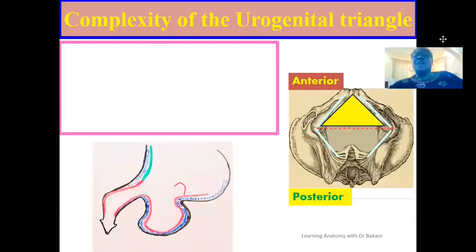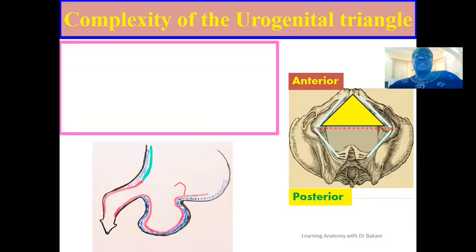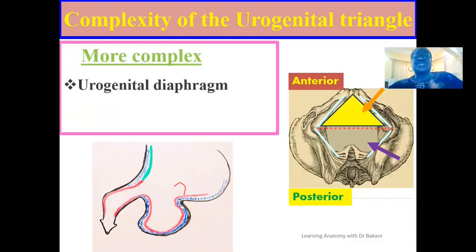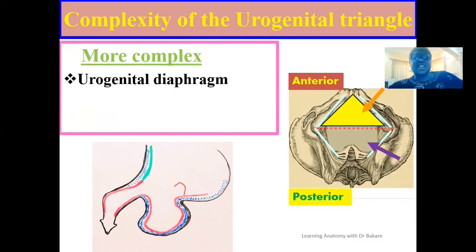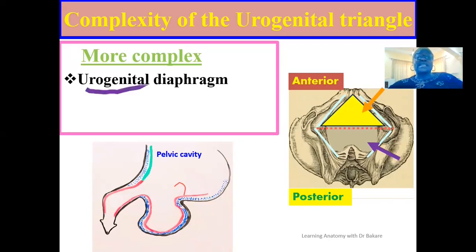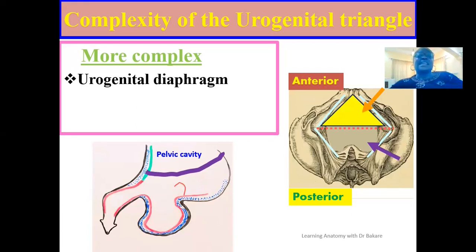Going back to our subdivision of the entire perineal space into two triangles: we have one at the front, referred to as the urogenital triangle, and another behind, referred to as the anal triangle. If you compare these two triangles, the urogenital triangle is more complex. This complexity is created as a result of the structures located within it. Within the urogenital triangle we have the urogenital diaphragm. The pelvic cavity is inferiorly limited by the pelvic diaphragm, also referred to as the pelvic floor.